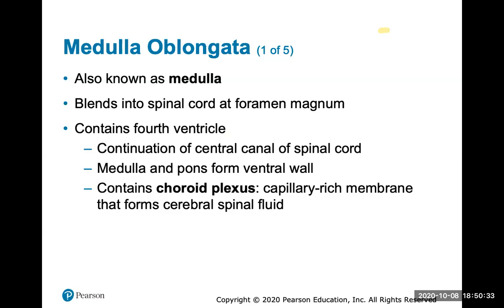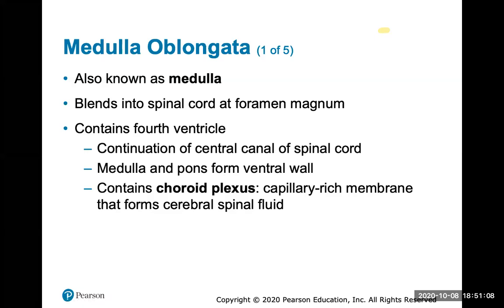The medulla oblongata is the third and final part of the brain stem. It blends into the spinal cord at the foramen magnum — the large hole at the base of the skull. The medulla oblongata also contains the fourth ventricle and the choroid plexus, which is important to know because the choroid plexus is responsible for forming all cerebrospinal fluid.